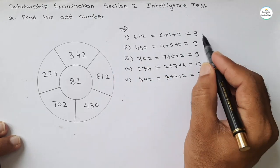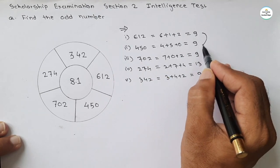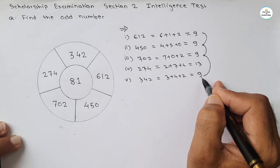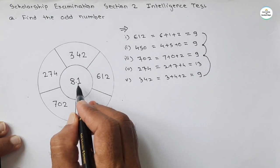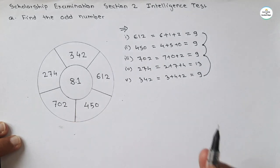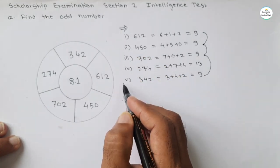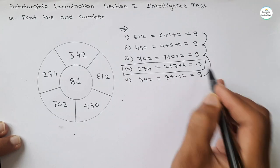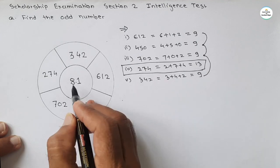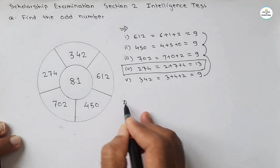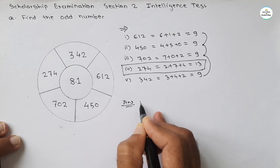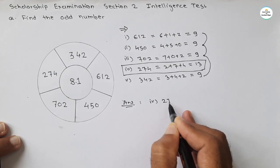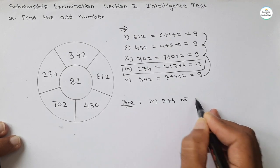The last number, 342: 3 plus 4 plus 2 equals 9. So for the first, second, third, and fifth numbers the sum of digits is 9, which is the square root of the central number 81. But the fourth number, 274, has no such relation because its digit sum is 13, not related to 81. So our answer is 274.